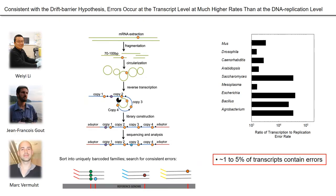The drift barrier hypothesis is consistent with another set of comparative data that we've been gathering: the error rate at the single nucleotide level in transcription. The transcriptional error rate for a nucleotide site is a thousand to a hundred thousand times higher than the rate in the same organism at the level of replication. These data are consistent with the drift barrier hypothesis, because errors arising in transcripts are transient, where those at the level of DNA leave lingering effects across generations.